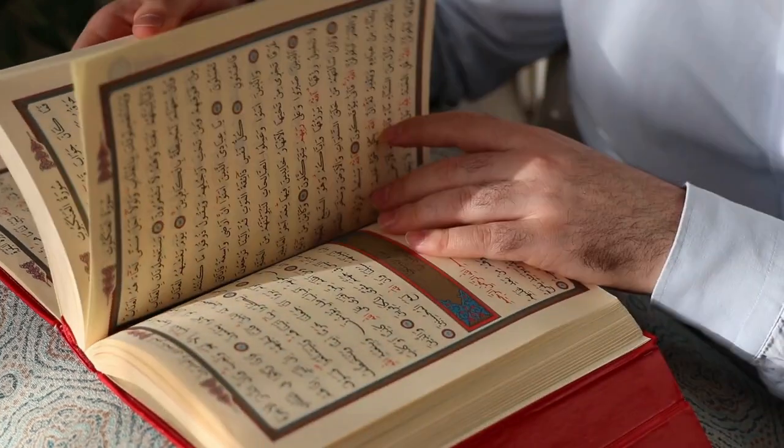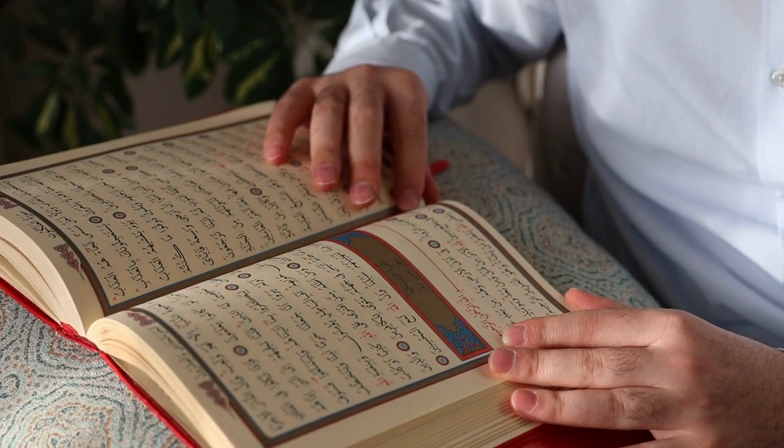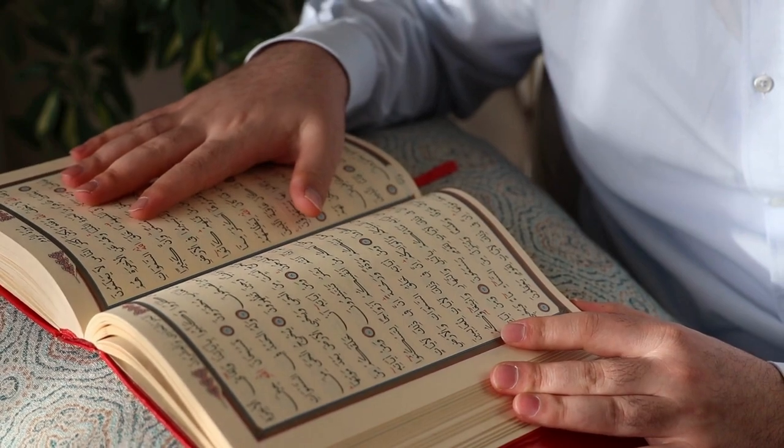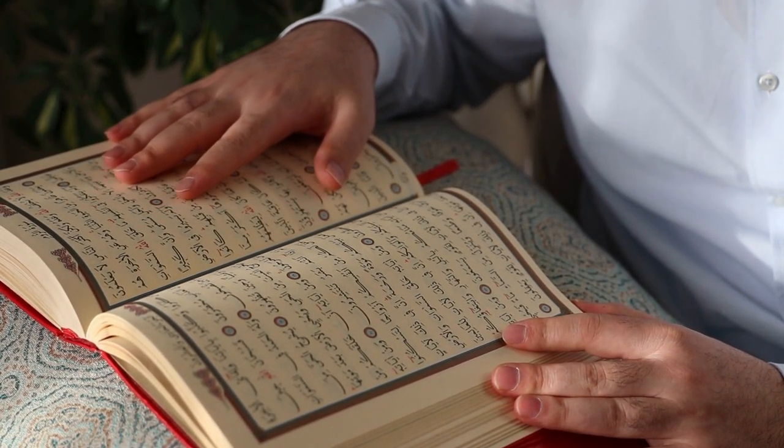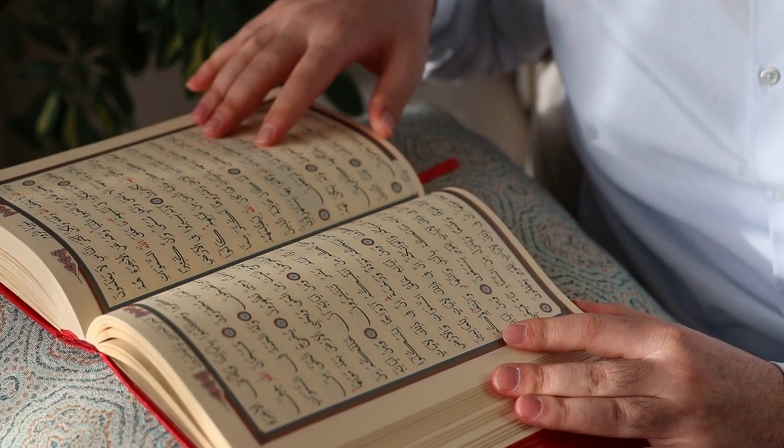Moreover, God speaks of the embryo's three-stage growth process in the mother's womb. He reveals that he created the womb with three veils, cloaks, shields, or envelopes of darkness around the child. Now we know that three layers of darkness separate the embryo from the outside world.